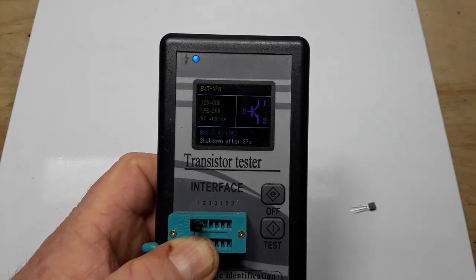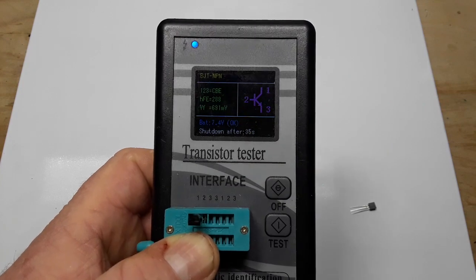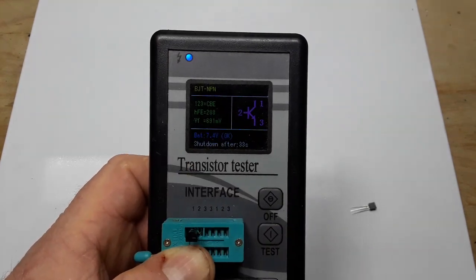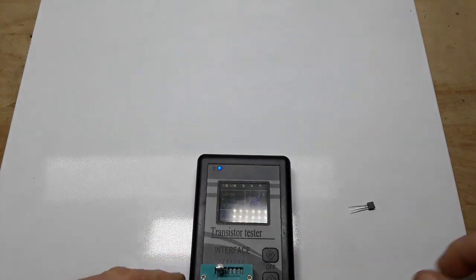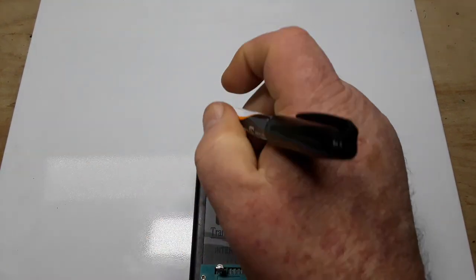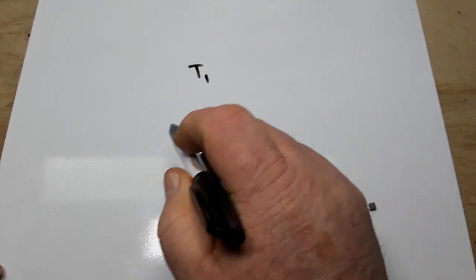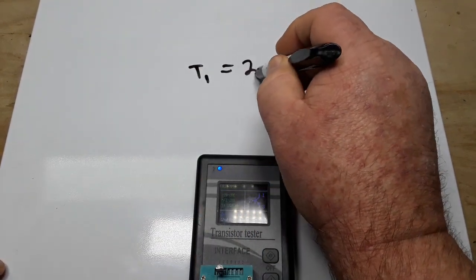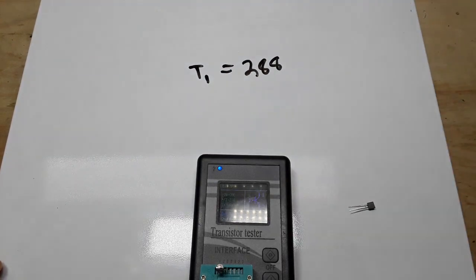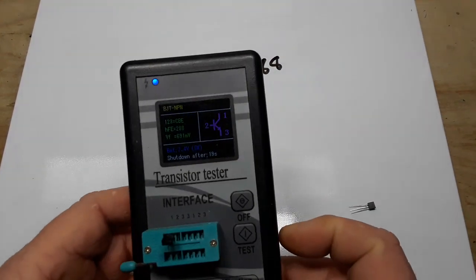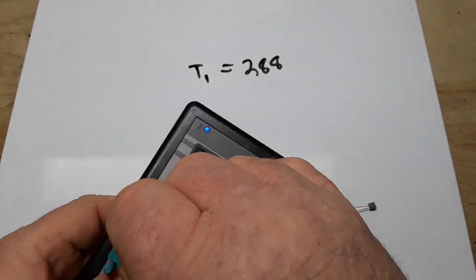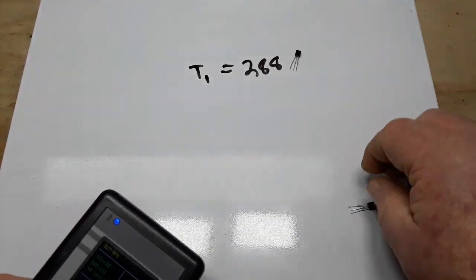So our beta, also called HFE here, is 288 on this one. So we'll call this transistor one, transistor one, and its beta is 288. And we'll put that guy up there so we don't get it mixed up.